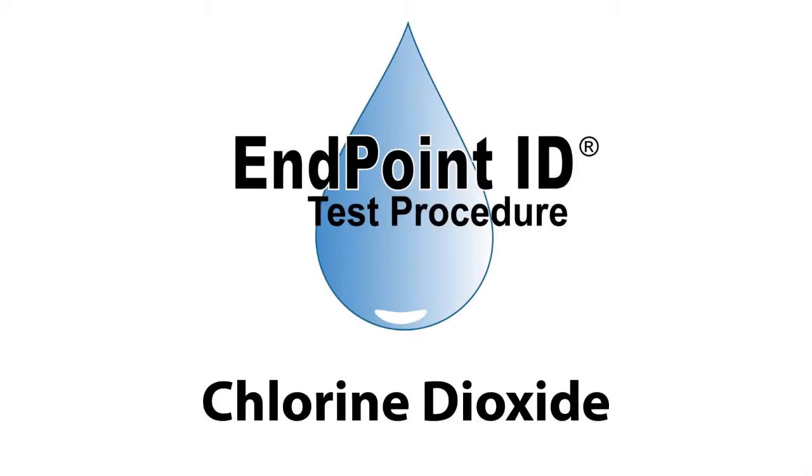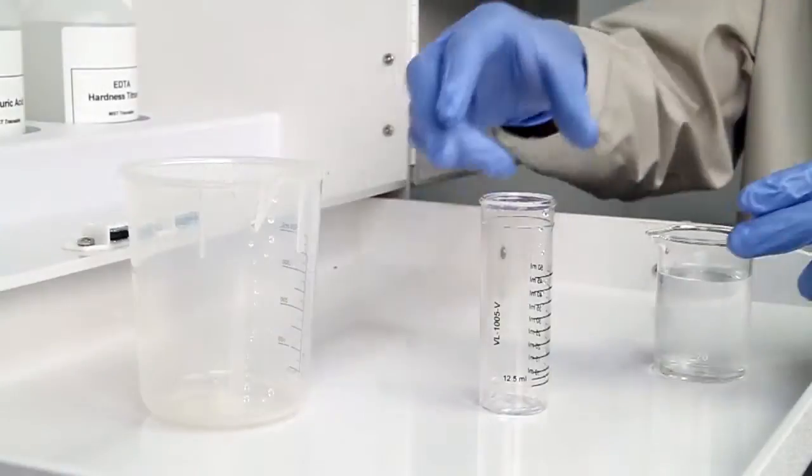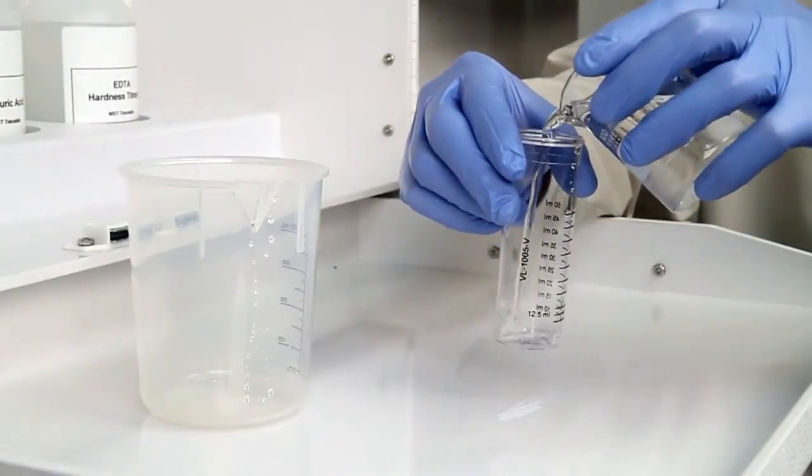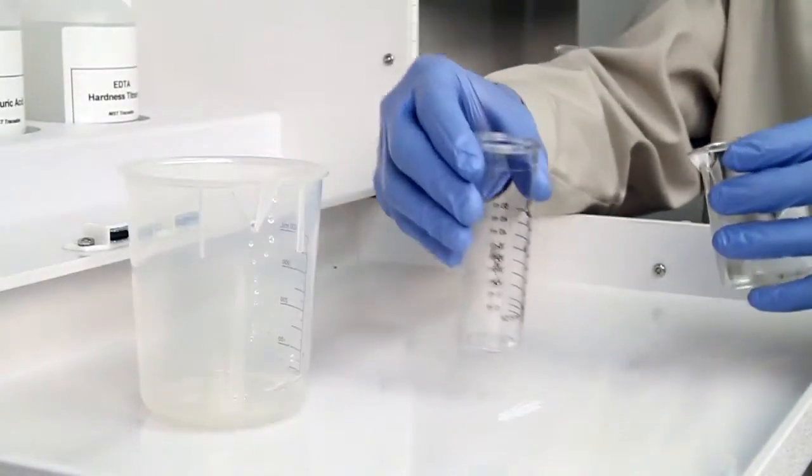This is a demonstration of a Chlorine Dioxide Drop Count Test Kit using EndpointID Procedures. The first step according to the EndpointID procedure is to collect an accurate sample. The smallest change in sample size will lead to inaccurate results.